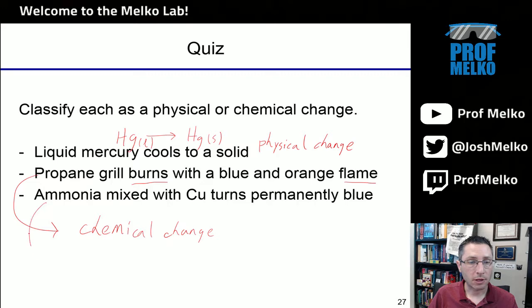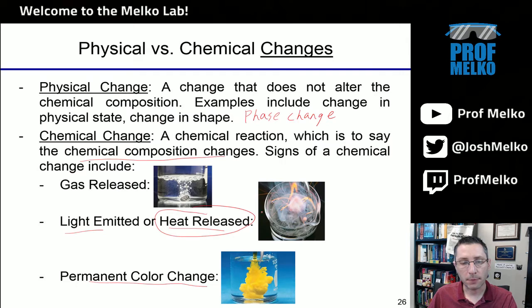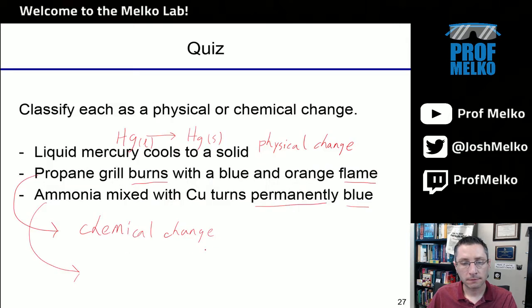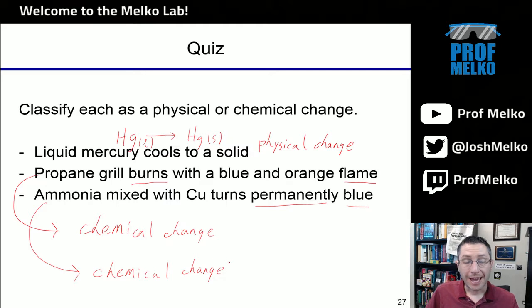The last one: ammonia mixed with copper turns permanently blue. A permanent color change is a chemical change — something that's irreversible. You have altered the very essence of this substance, and that's evidenced by this permanent color change.